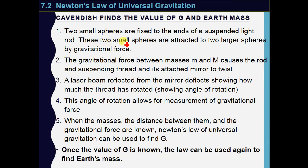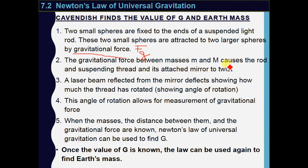These two small spheres are attracted to two larger spheres by gravitational force. Gravitational force exists between all masses, and we can only see or feel it when we have a very large mass. That's why we brought a very large mass beside a very small mass — in order to feel and see this attraction. The gravitational force between the small and big masses causes the rod, the suspending thread, and its attached mirror to rotate or twist.